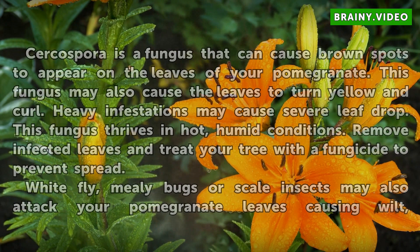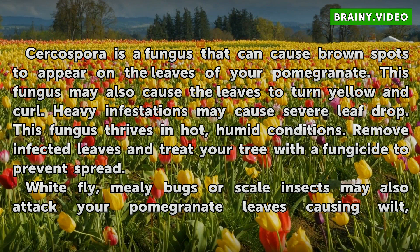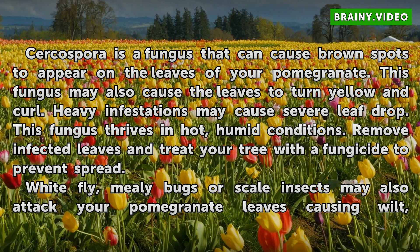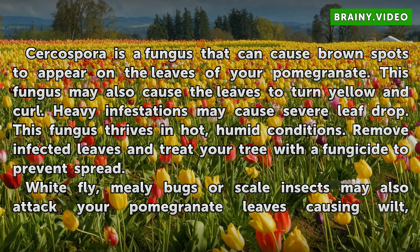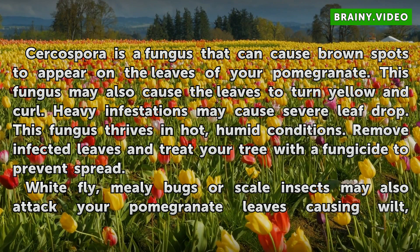Leaf damage. Cercospora is a fungus that can cause brown spots to appear on the leaves of your pomegranate. This fungus may also cause the leaves to turn yellow and curl. Heavy infestations may cause severe leaf drop. This fungus thrives in hot, humid conditions. Remove infected leaves and treat your tree with a fungicide to prevent spread.